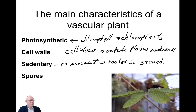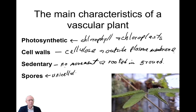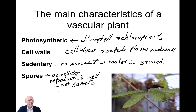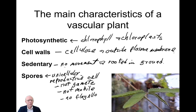One of the more technical characteristics of plants that you probably haven't encountered before is that they have spores. A spore is a unicellular reproductive cell. These are not gametes — they are reproductive cells which are not gametes in plants, and the spores are not mobile, which means they have no flagella.